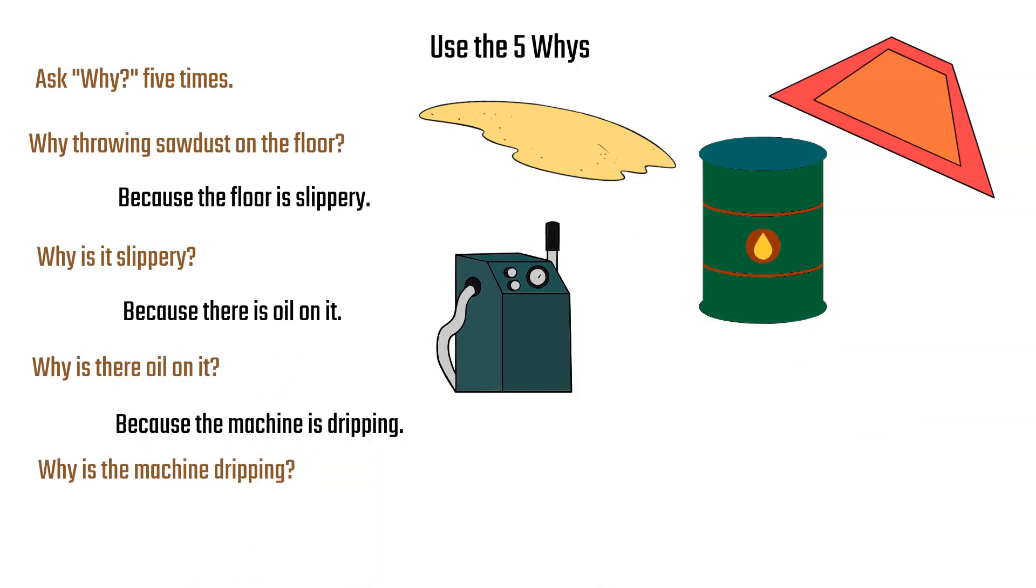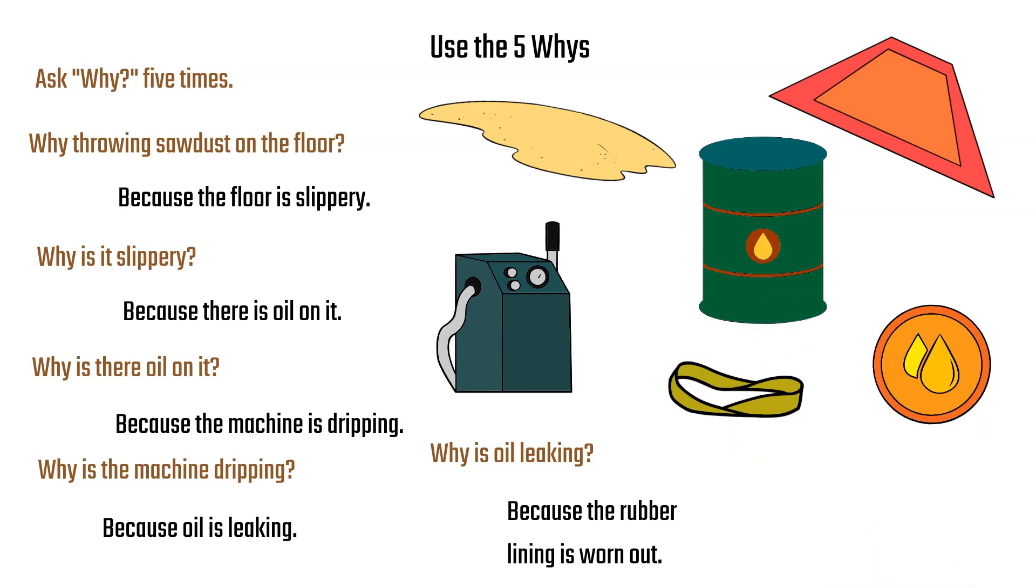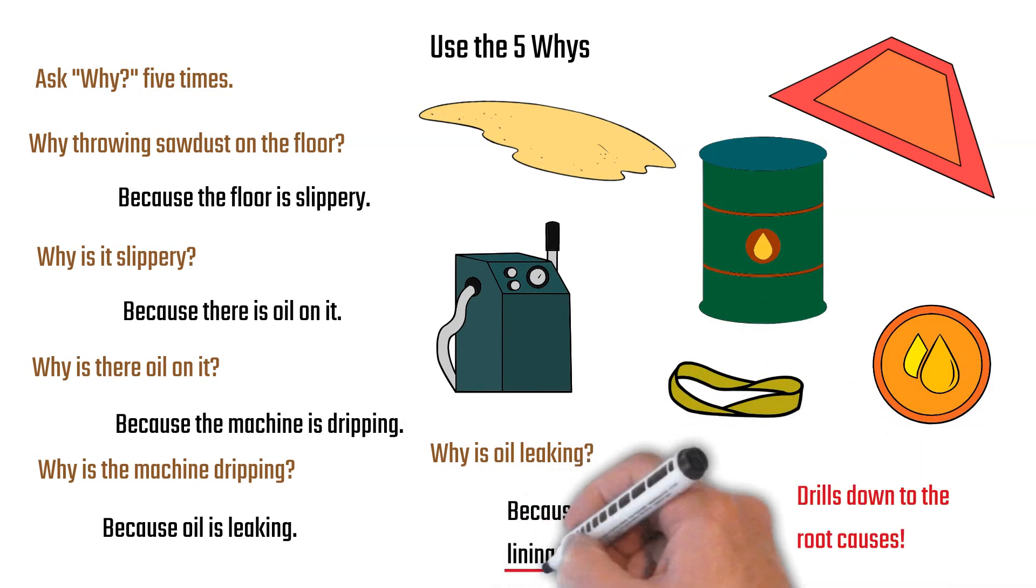Well, why is the machine dripping? Because oil is leaking. Why is oil leaking? Well, because the rubber lining is worn out. Voila, replace the rubber lining. So you drill down to the root cause of the problem with the five whys.